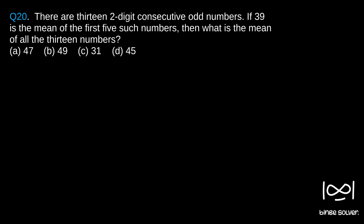Question 20: There are 13 two-digit consecutive odd numbers. If 39 is the mean of the first five such numbers, then what is the mean of all 13 numbers? There are 13 numbers, they are two-digit consecutive odd numbers — this is the information given.